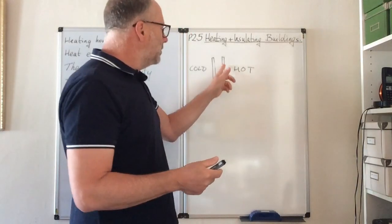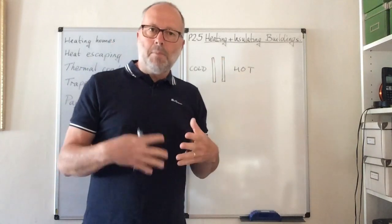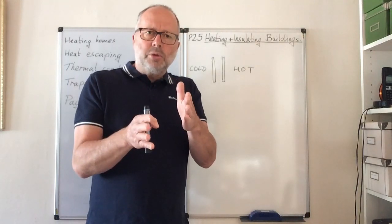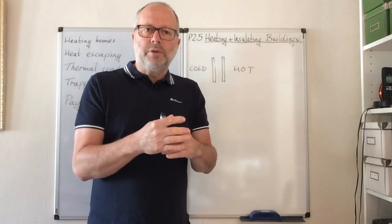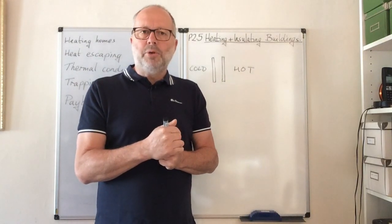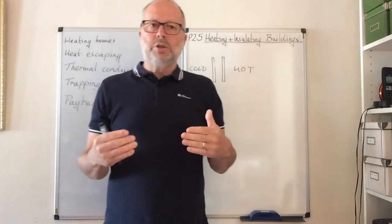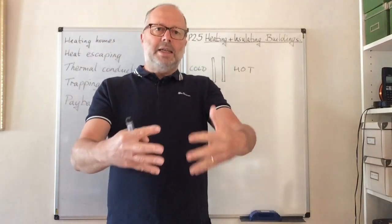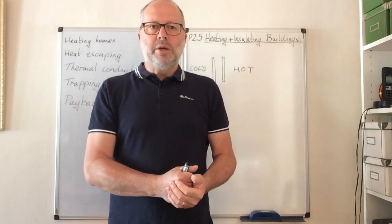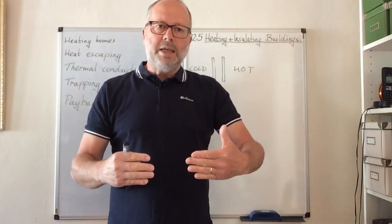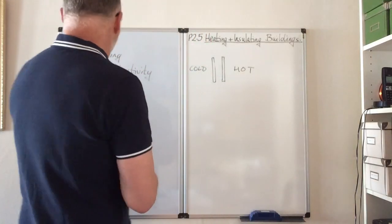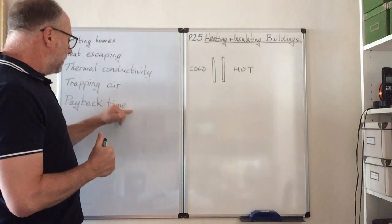Heat can be lost through windows — double glazing and even vacuum glazing help reduce that. Cavity wall insulation and loft insulation reduce losses through walls and ceilings. Another trick: put aluminium foil behind your radiators. Radiators are often on outside walls, so heat can escape through the wall. The foil reflects heat back into the room, so you're not losing that energy through the wall.